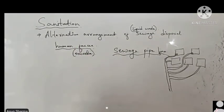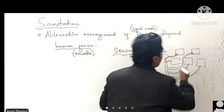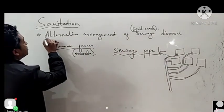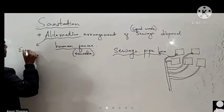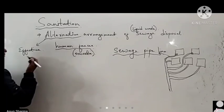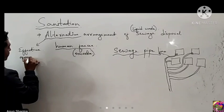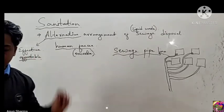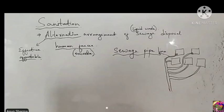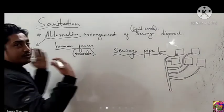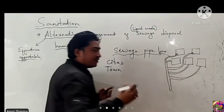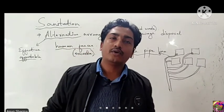The sewage pipeline system is of high cost and requires a large amount of money to build. A good number of smaller towns and most rural areas do not have a sewage system at all. This system is mainly found only in cities.